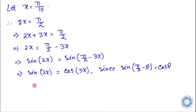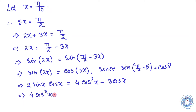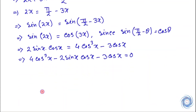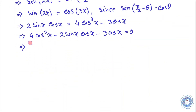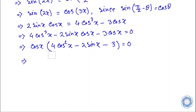Now we will use the formula of sin 2-theta and cos 3-theta. From here we have, and this implies. Now from here we have. We know that x equals pi over 10, and at pi over 10, cos x is non-zero. So from here we have.